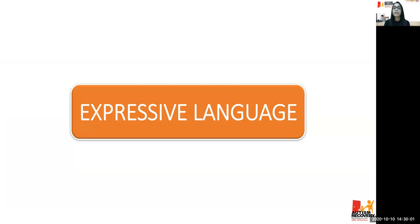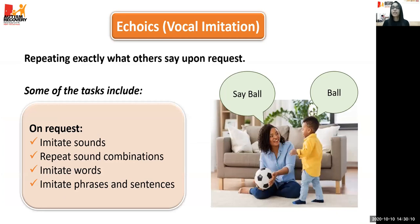Moving on to expressive language — how we use language. The first one is echoics, also known as vocal imitation. Echoics means repeating exactly what others say upon request — basically repeating exactly what is heard. For example, the adult says 'say ball' and the child says 'ball.' Some of our kids can say sounds or words spontaneously, but when asked to say those sounds under instruction, they have difficulty. So when teaching echoics for those kids, we make a list of the sounds or words the child is saying spontaneously and work on those in our echoic trials.